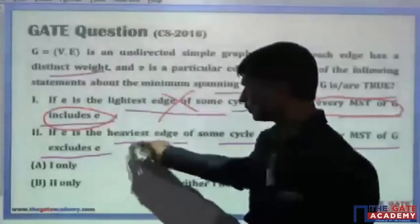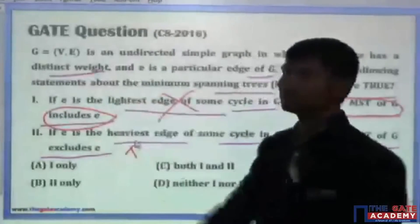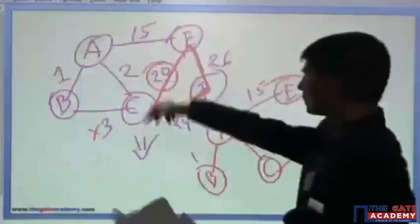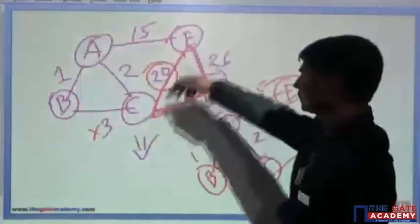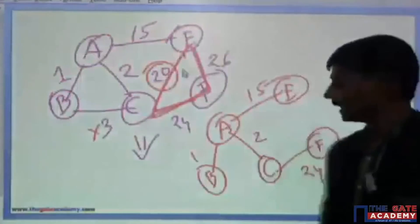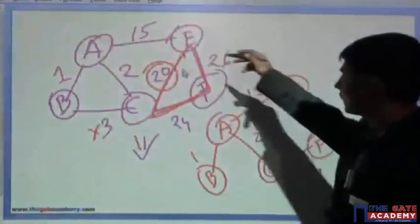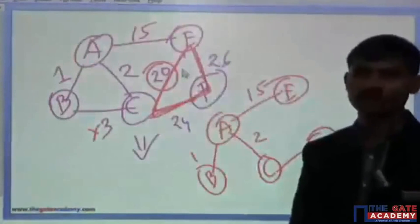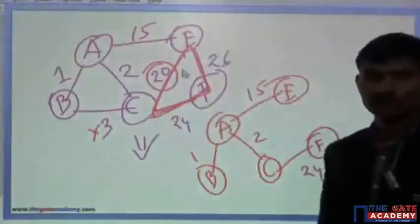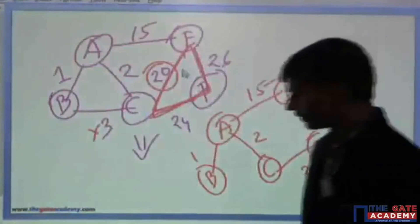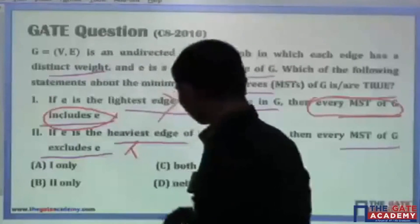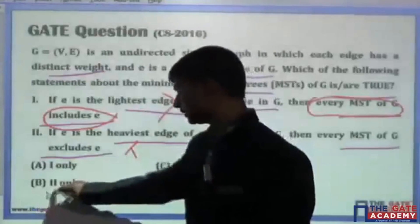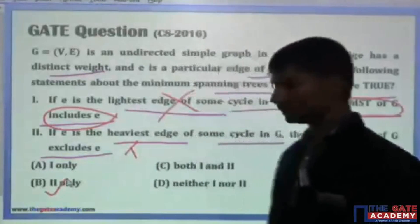This statement is true, but the first statement is not true, and the counter-example is what we have shown. You will not find that edge E to C available in any of the spanning trees — you can try this yourself. So the answer will be B, the second statement only, which is the correct one. The rest are false.